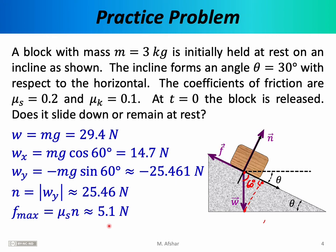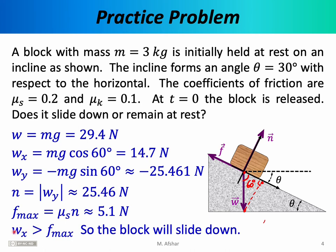We can now answer the question. The y component of weight (25.46 N) is balanced by the normal force. The x component — 14.7 newtons — is what tends to pull the block down the incline. Since 14.7 newtons exceeds the maximum static friction of 5.1 newtons, the block will definitely slide down the incline.